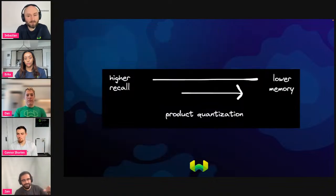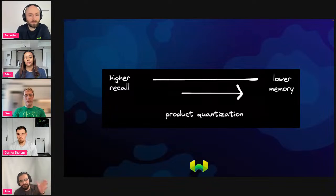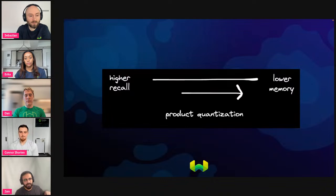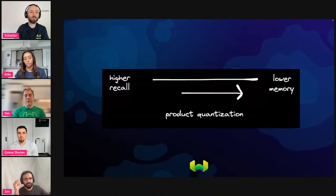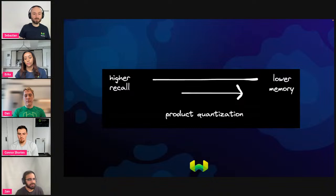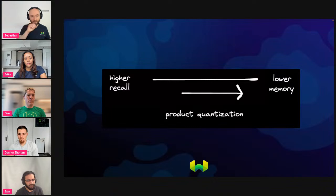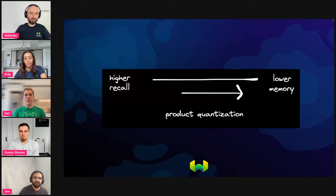The memory saving doesn't come for free. The one thing you have to balance when using PQ is that the more you compress the vectors, the lower the recall — because you're summarizing vectors by the neighborhood they live in using centroids. It's a balance between how much recall you need versus how much memory savings you want. That works with HNSW, and by default PQ is not enabled — it's experimental right now, but you can enable it by setting the enable flag to true in the PQ configuration.